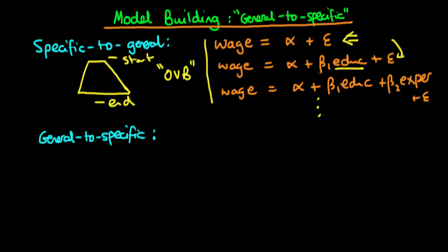This means that the value of beta1 we actually get in this regression may be biased — possibly biased downward such that the effect of education appears unimportant, causing us to falsely remove education from the regression. On the flip side, if we kept education in and then added experience, other important omitted covariates correlated with experience might inflate beta2, causing us to falsely retain experience even though it's not truly statistically significant. This methodology leaves itself open to omitted variable bias and can lead you down a route that doesn't reflect the true underlying economics.